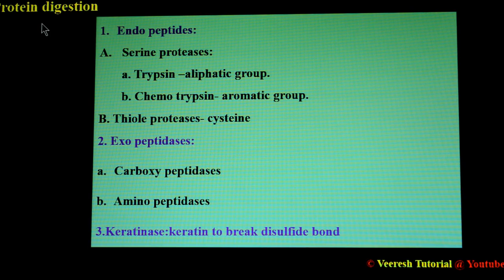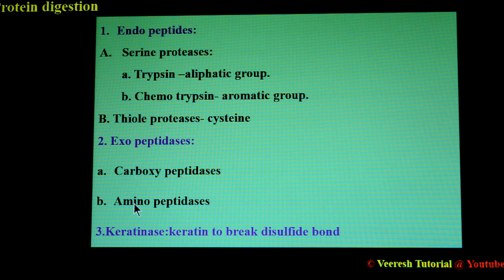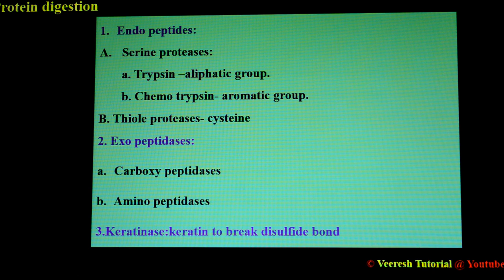Enzymes involved in protein digestion: there are three types. First are endopeptidases, which include serine proteases acting on trypsin and chymotrypsin, and thiol proteases acting on cysteine. Second are exopeptidases, which include carboxypeptidases and aminopeptidases. Third is keratinase, which acts on keratin to break down the disulfide bonds present in wool, hair, and feather. Keratin is a structural protein.